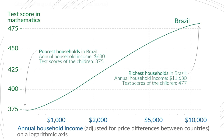Looking at a figure where the y-axis shows international mathematics test scores and the x-axis shows annual household incomes in Brazil, there is a clear correlation between incomes and test scores. Lower-income households have lower scores, and as income rises, mathematics scores also increase. The poorest household in Brazil has an annual income of $630 with a test score of 375, while the richest has an annual income of $11,630 with a test score of 477.